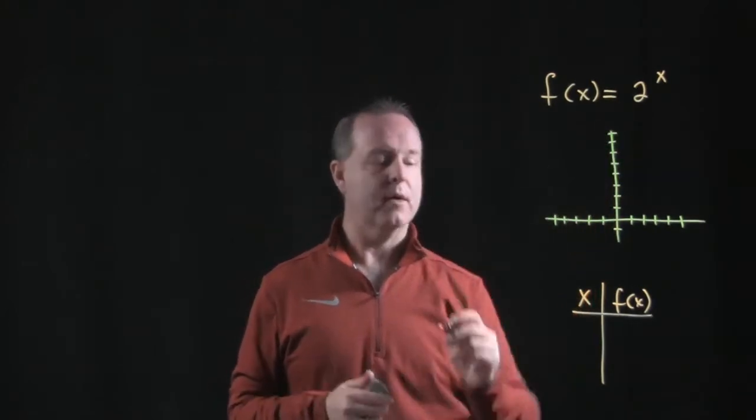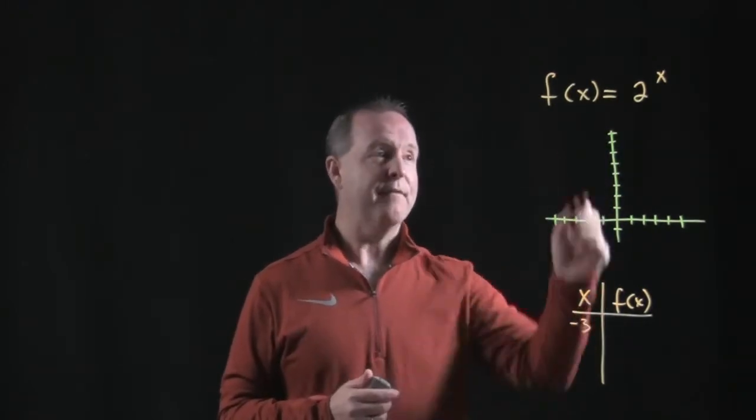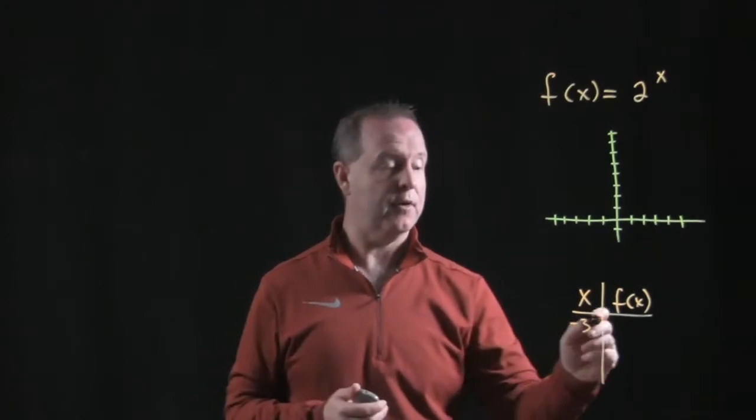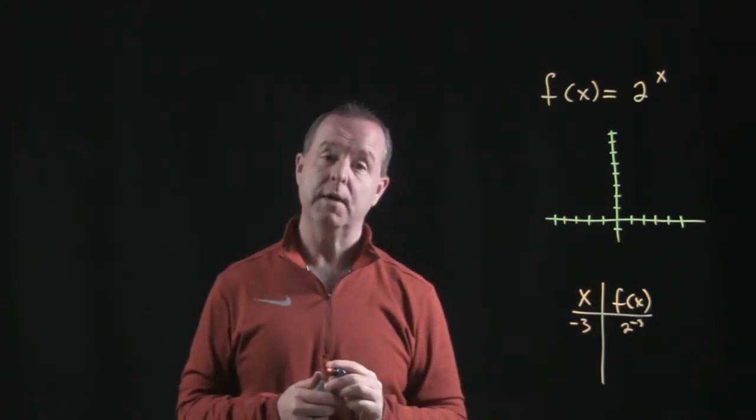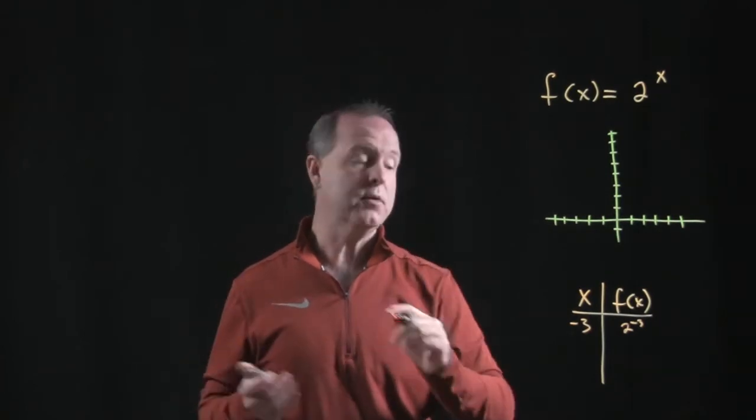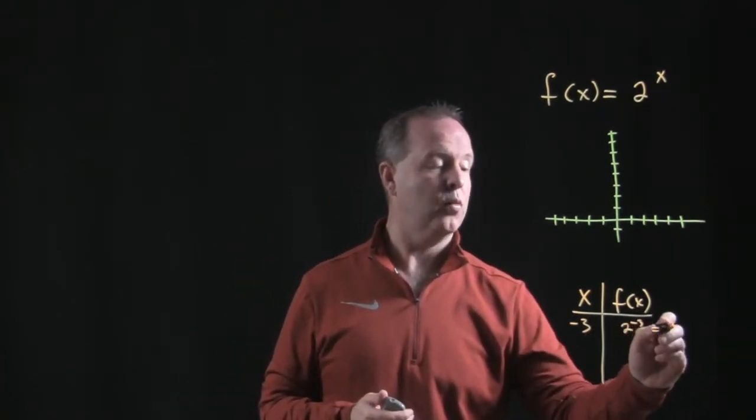So if x were negative 3, f of x is 2 to the negative 3rd. And remember how to do 2 to the negative 3rd? That's 1 over 2 to the 3rd, which equals 1 over 8.